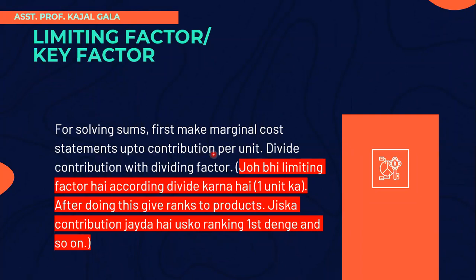We make a normal statement — sales minus variable cost gives the contribution. Same we have to prepare, but only up to the contribution per unit. Contribution per unit means: sales minus variable cost equals contribution per unit.